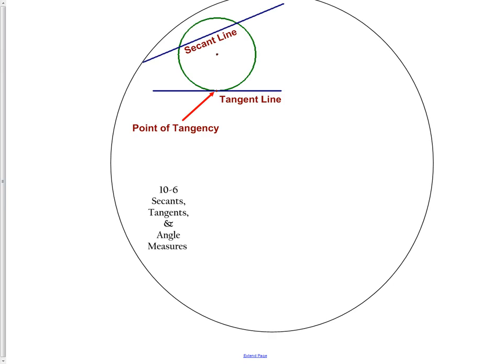A secant line is simply a line which crosses through the circle at two points. You'll notice it's very different than a tangent line. A tangent line touches the circle once and only once. A secant line touches the circle twice every time.